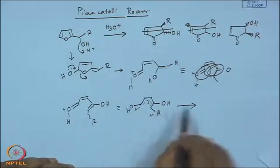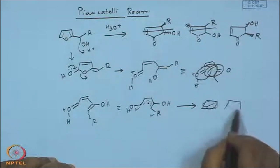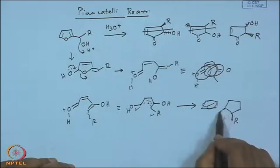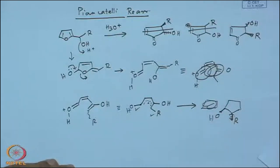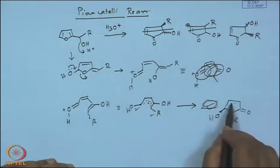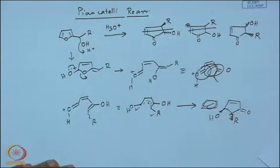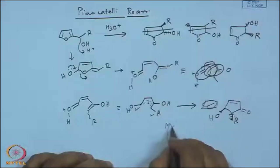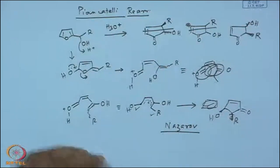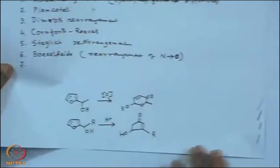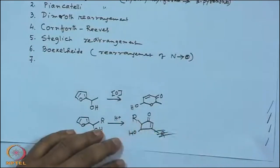This R and this OH would be trans, right. The other one, if you just do the electron balancing, it would be an alpha-beta unsaturated ketone. What is the name of the reaction? Four pi electron cationic system cyclization leading to cyclopentenone - it is basically the Nazarov reaction. So from the furan you are going to get this. That means R should be at the 3 position. This reaction has been extended to many systems.